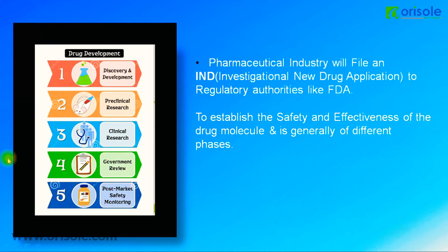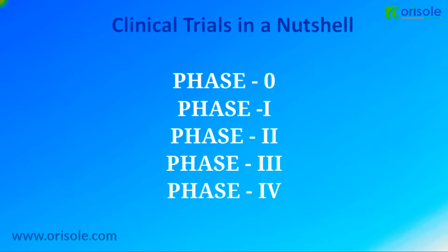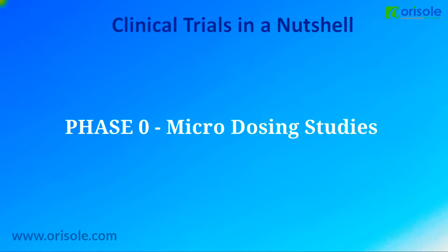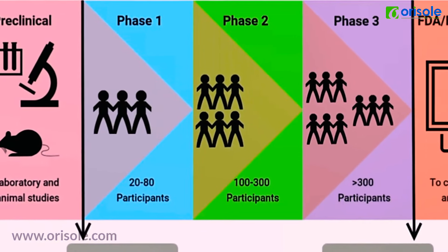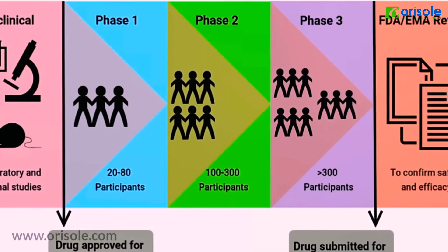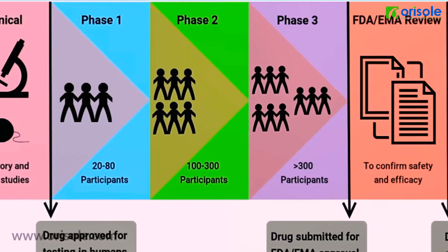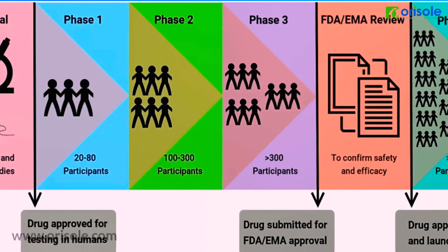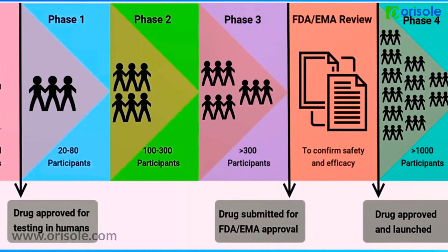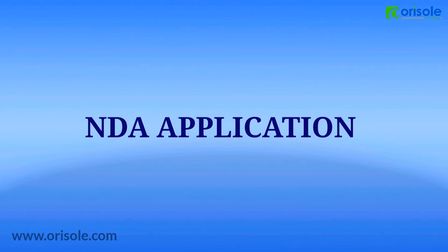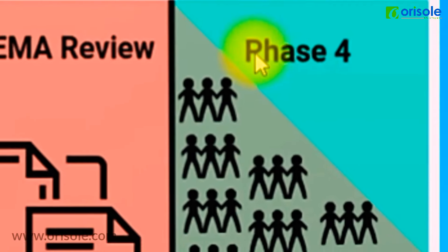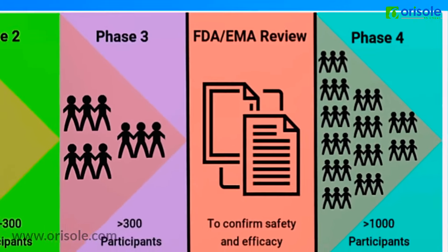If the regulatory authority approves the IND application, the drug is moved towards clinical trials or clinical research, where it is tested for safety and effectiveness in human beings. There are different phases: Phase 0, Phase 1, Phase 2, Phase 3, and Phase 4. Phase 0 is called micro-dosing studies to decide the dose. Phase 1 is conducted in a small group of healthy volunteers to decide drug safety. Phase 2 is conducted in around 100 participants to decide effectiveness. Phase 3 is conducted in larger populations to compare drug effectiveness with existing market drugs. Once Phase 3 is completed, the pharmaceutical company files a New Drug Application (NDA) to the FDA. If approved, the drug is released into the market — this is Phase 4.